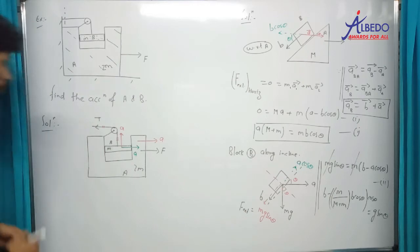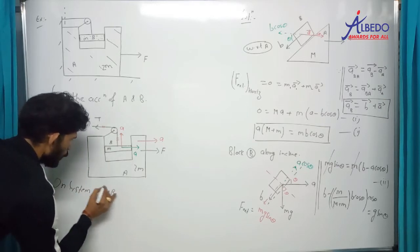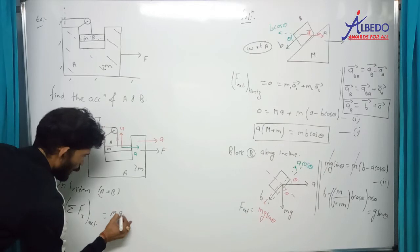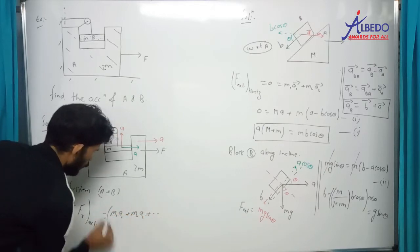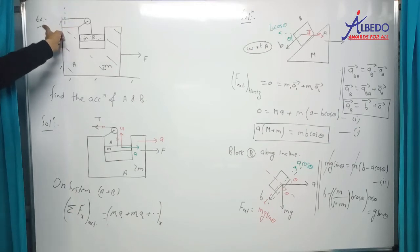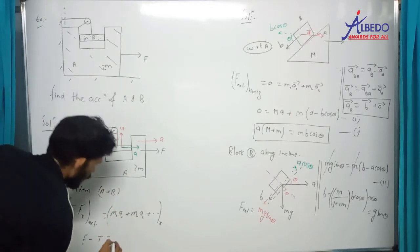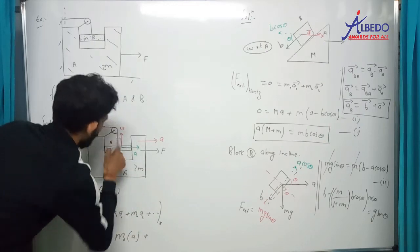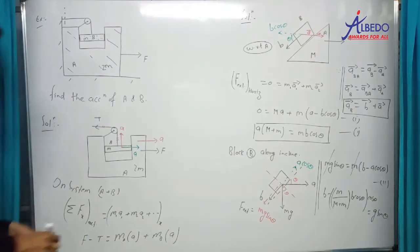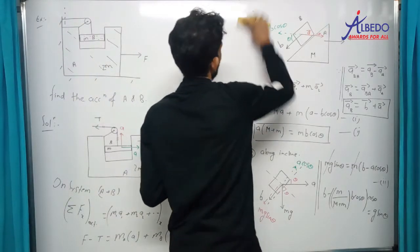System पर लिख रहे हैं A plus B. F_x total external = m1·a1 + m2·a2, यह सब चलेगा only x में. External में ध्यान दीजिए — यहाँ से cut करेंगे तो यह tension external है, यह wall लगा रहा है. तो -T = mass into acceleration + B वाले का mass, and only x वाला acceleration. Masses put कर देते हैं.